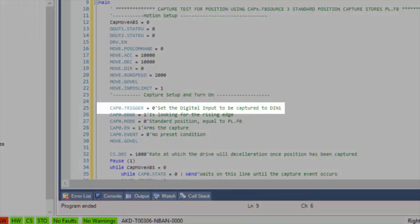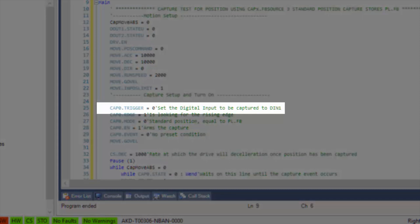Cap0.Trigger equals 0 will set the digital input 1 to the trigger source.